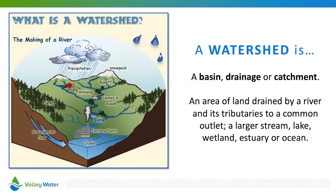First, let's define what exactly a watershed is. A watershed is an area of land that water flows across or through as it makes its journey to a body of water like a creek, river, lake, or ocean. The boundary of a watershed is the ridge line of high land that surrounds it, like the edge of a bowl. Since we all live in the watershed of a creek or stream, this means that your house, the roads, your school, and all the buildings in our neighborhoods are in a watershed too.